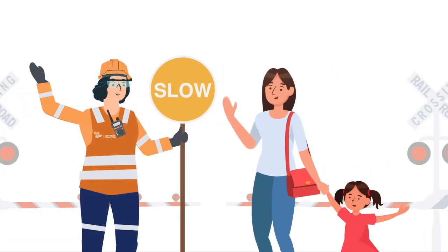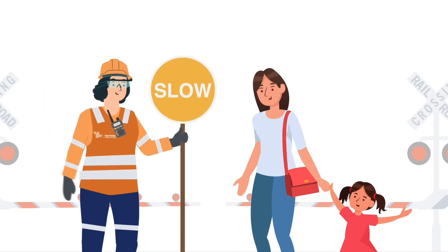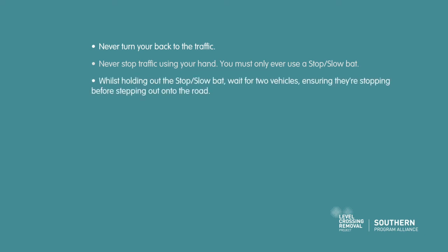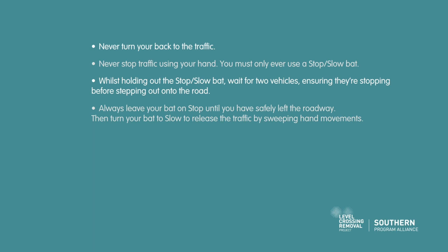Safety is a priority for you and the public. Remember the following: never turn your back to the traffic; never stop traffic using your hand — you must only ever use a stop slow bat. Whilst holding out the stop slow bat, wait for two vehicles ensuring they are stopping before stepping out onto the road. Always leave your bat on stop until you have safely left the roadway, then turn your bat to slow to release traffic by sweeping hand movements.